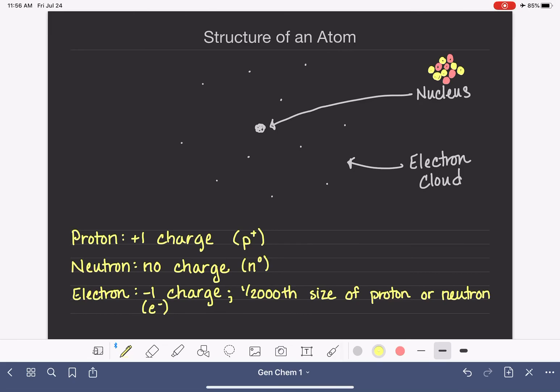And so this is really just sort of an overview, a generalization of the structure of the atom. And in the next few videos, we're going to get into quite a bit more detail, including a better description of the location of the electrons in the cloud.